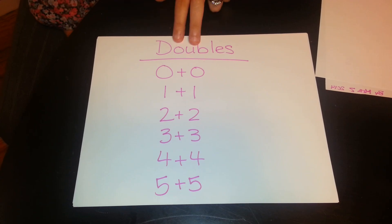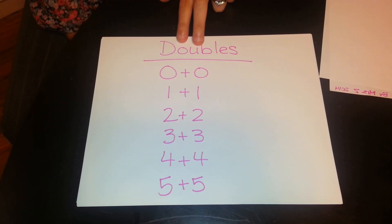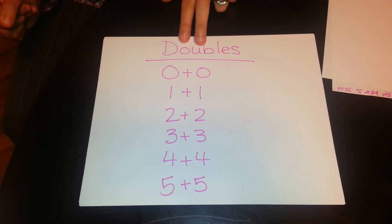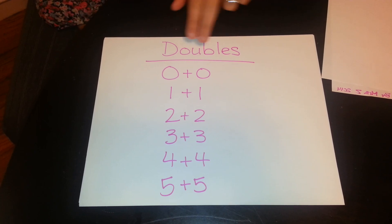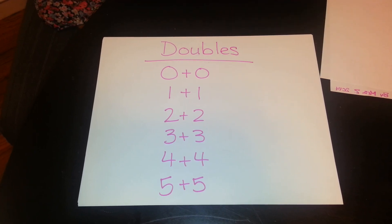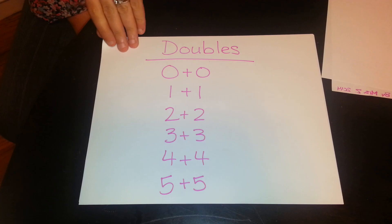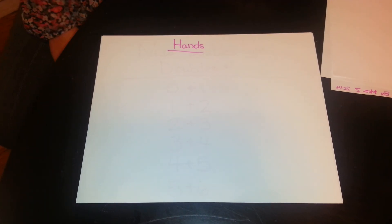Another strategy we have is doubles. These doubles facts the students should know fluently. Many of them already know these facts fluently, but for those who don't we do have an extra multi-sensory technique we do in class with our hands.